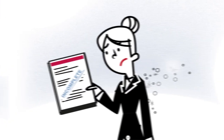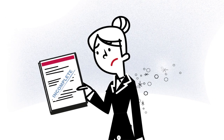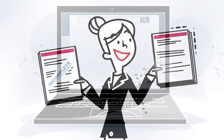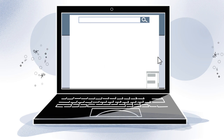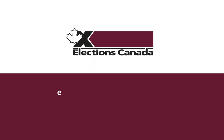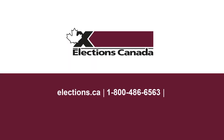If your nomination is rejected, you can present a new nomination paper up until the deadline. You will find the form and more details about the process on the Elections Canada website. To learn more, please take a look at our other modules and resources.